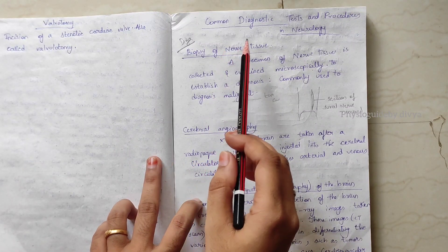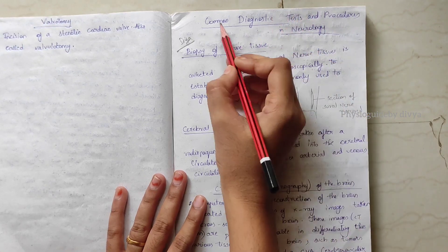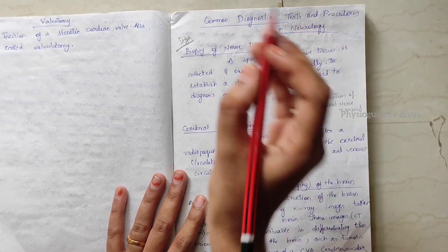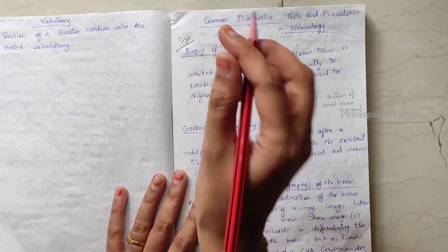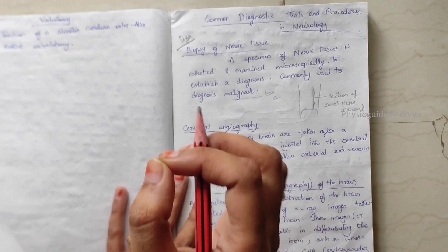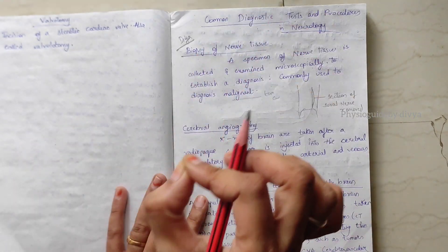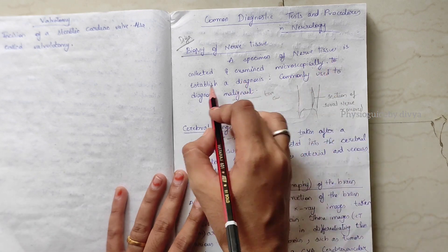Hello people, welcome to my channel Physio Guide by Divya. Today I'm going to explain about common diagnostic tests and procedures in neurology. Biopsy of nerve tissue means examination of the tissue taken out. The specimen of the nerve tissue is collected and examined microscopically to establish a diagnosis.